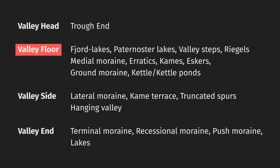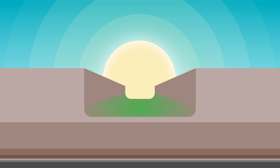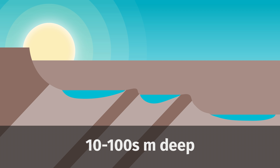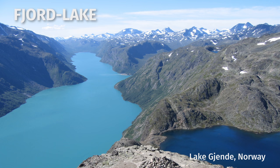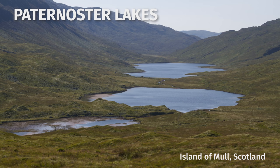The floor of a U-shaped valley will, for the most part, be wide and flat. Where bands of soft rock are present, the valley glacier will have carved depressions into the rock, tens to hundreds of meters deep, forming fjord lakes — large lakes spanning most if not all of the valley floor — or paternoster lakes, smaller lakes that chain together like beads on a string.